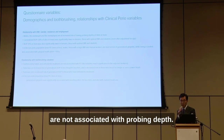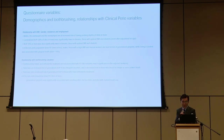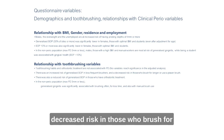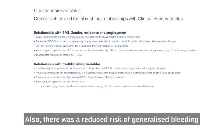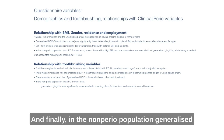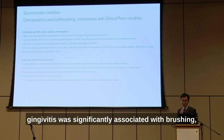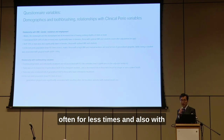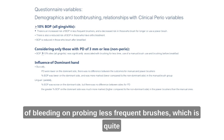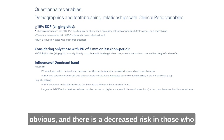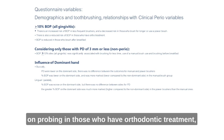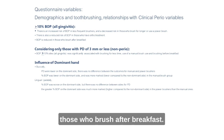Looking at the relationship with toothbrushing variables: toothbrushing habits and orthodontic treatments are not associated with probing depths. There was an increased risk of generalized bleeding on probing in less frequent brushers and a decreased risk in those who brush for longer or use a power brush. There was also a reduced risk of generalized bleeding on probing in those who have had orthodontic treatment. In the non-perio population, generalized gingivitis was significantly associated with brushing for less time and with manual brush use. For those with gingivitis, there is an increased risk of bleeding on probing in less frequent brushers, a decreased risk in those who brush for longer or use a power brush, a reduced risk in those who have had orthodontic treatment, and bleeding on probing is reduced in those who brush after breakfast.